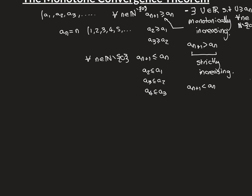If we draw a picture on the real line, here is zero and here is the upper bound. All points of the sequence start at a1 and keep moving rightward — they never go backwards. The theorem says they must accumulate somewhere. With infinitely many terms packed into a finite-length interval, they accumulate to a limit L. We can even say what L is: it's the supremum of all the terms of the sequence.